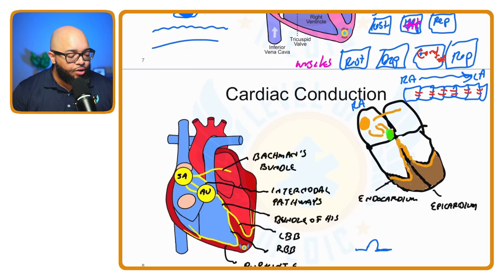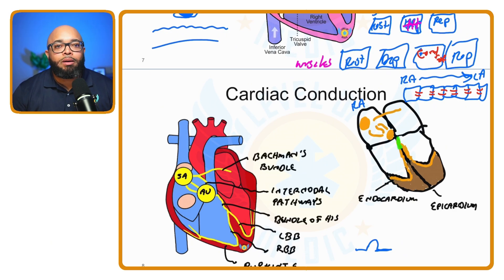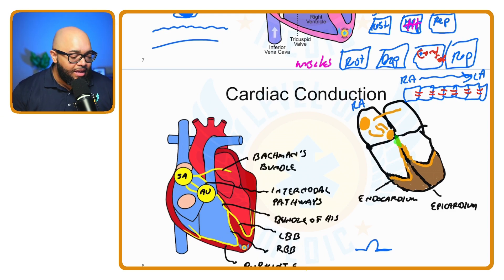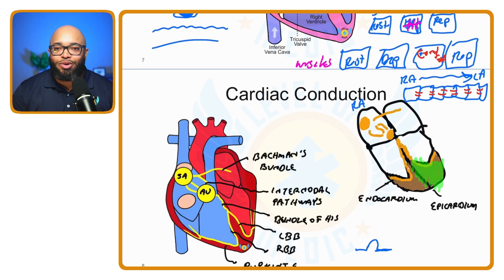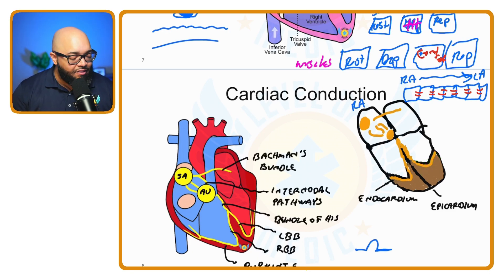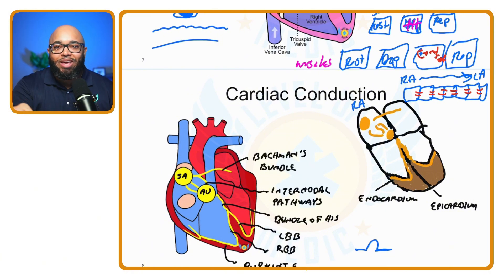The signal was at the AV node, and then the next part is it goes through the bundle of His. From there, the signal travels down the bundle branches to excite the ventricles — the left bundle branch on the left side and the right bundle branch on the right side. For the signal to get throughout the full thickness of the ventricle, we need extra help through Purkinje fibers, which aid in the signal spreading throughout the ventricle so the whole muscle can contract together.